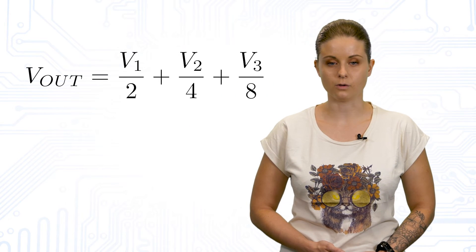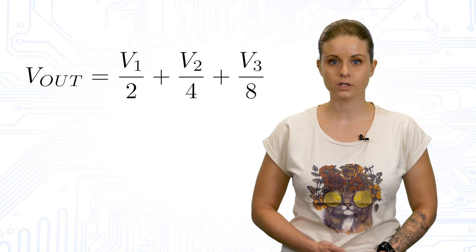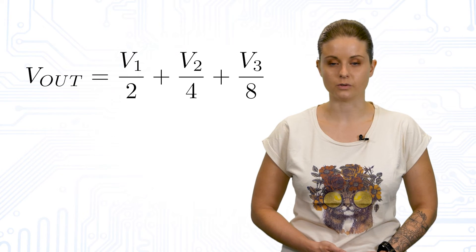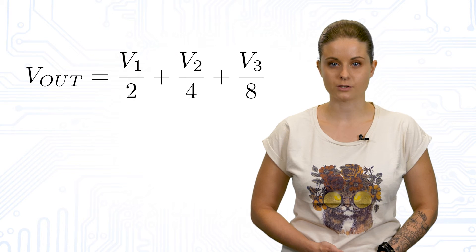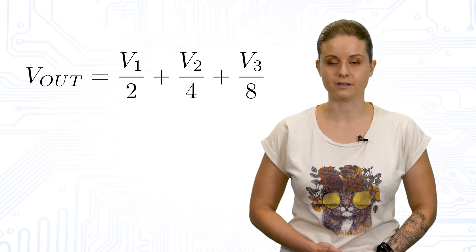By superposition, the branch at the most significant bit contributes a voltage of V1 over 2, the next branch contributes V2 over 4 and the last branch contributes V3 over 8. Based on the reference voltage and the individual bits in the DAC code, we can then develop an equation for the ladder. Extending this to the number of M branches in the resistive ladder gives this equation.